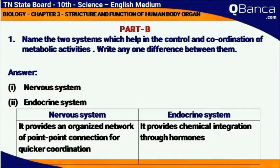Write any one difference between the Nervous System and Endocrine System. The Nervous System provides an organized network of point-to-point connections for quicker coordination, whereas the Endocrine System provides chemical integration through hormones.